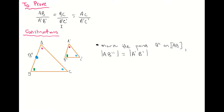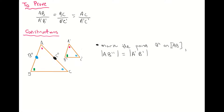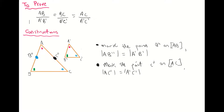Next I want to mark the image of C' over on our larger triangle. It has to be the same distance as C' is from A, so I'm going to label that point C''. So basically what I'm doing here is marking the point C'' on AC, and I've stated that the distance from A to C'' is the same as the distance from A' to C'.